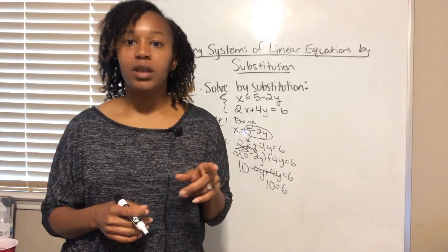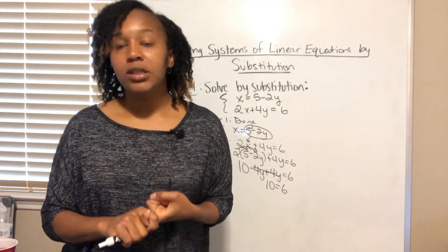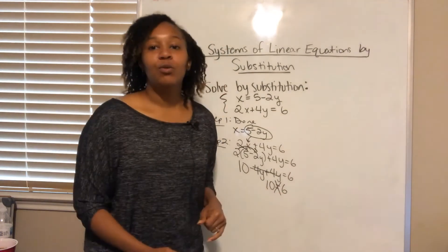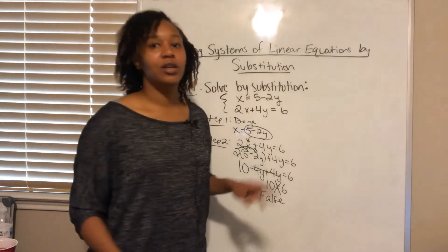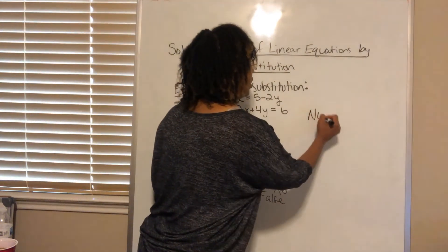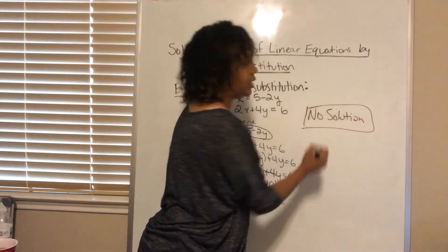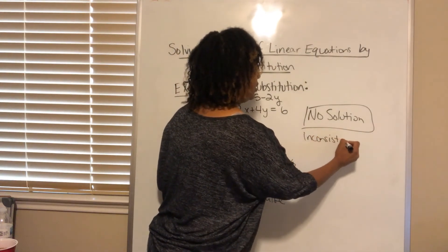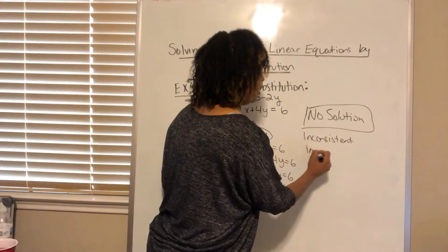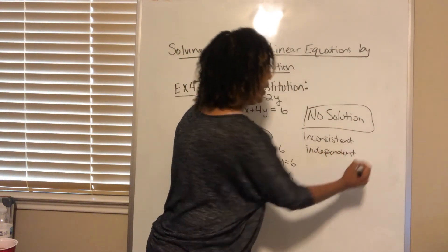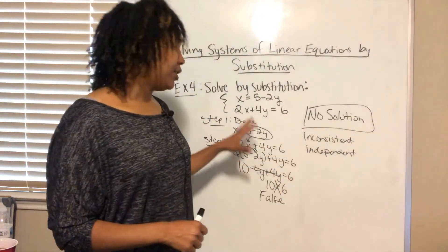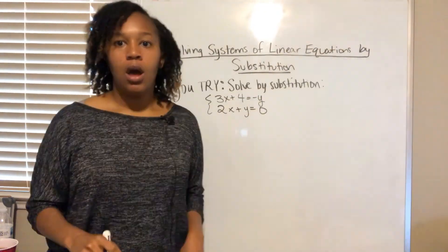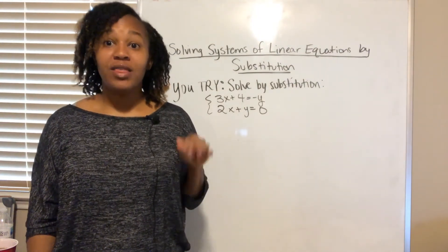After the variables cancel, we check whether the remaining statement is true or false. 10 equals 6 is false — 10 will never equal 6. So this is the case where there is no solution; the lines are parallel to each other. This is called an inconsistent system — inconsistent means there's no solution, and the lines are independent. There is no value of x and y that makes both equations true at the same time.